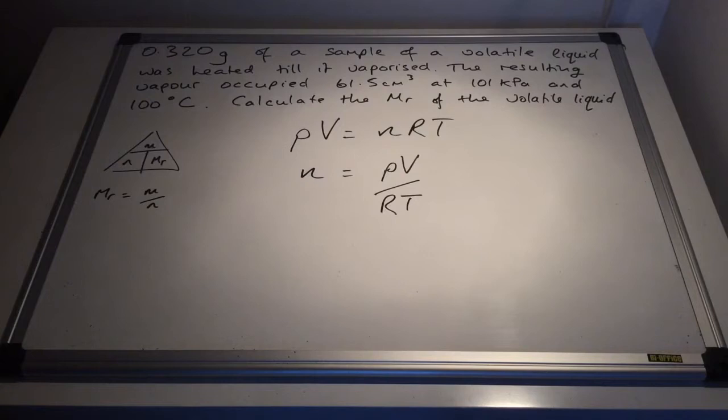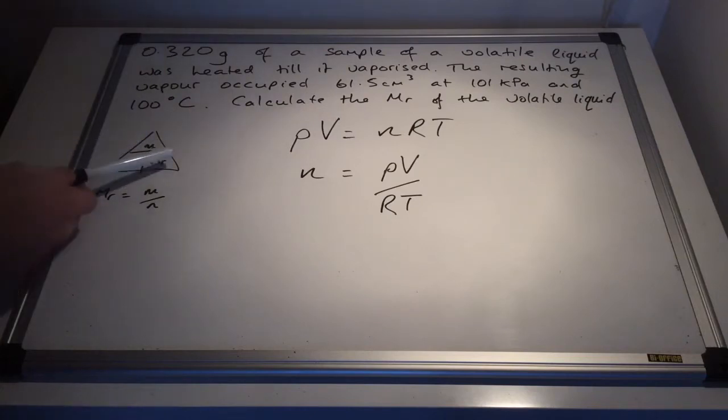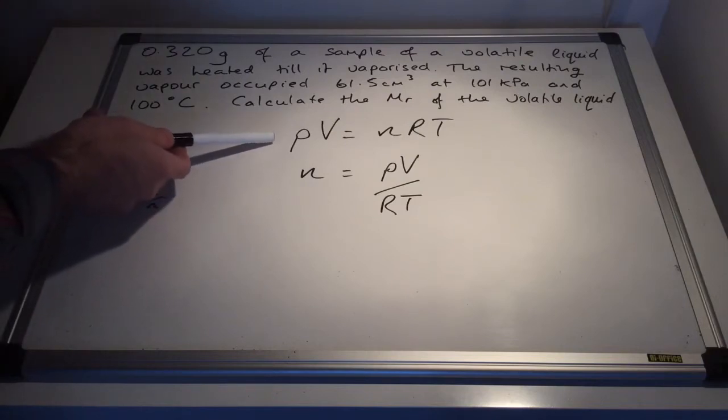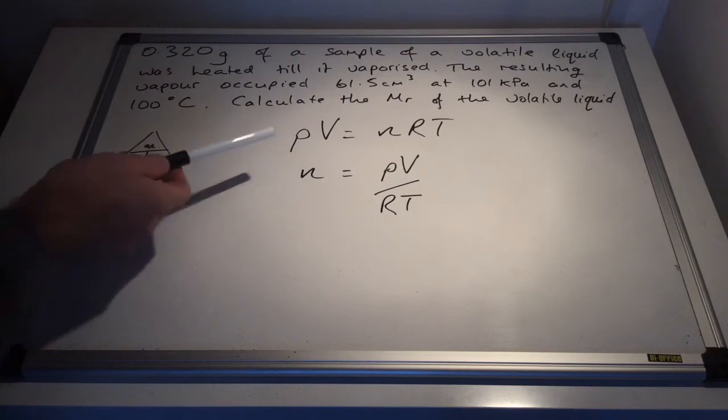So if I start by explaining what we're actually going to use the ideal gas equation for, we're asked to calculate the MR of the volatile liquid, and you can see there's the triangle that contains mass, moles, and MR. So we've got a mass here, so that's going to be that little M there. We need to calculate the MR, so MR is mass over moles, so we're going to use the PV equals nRT to calculate the number of moles.